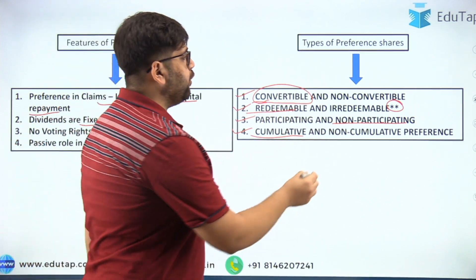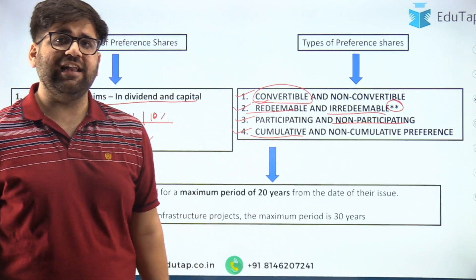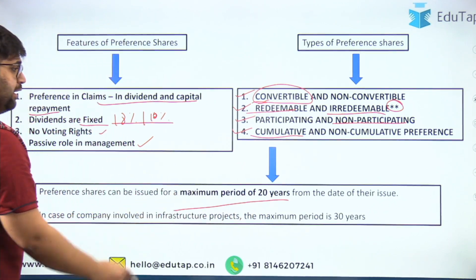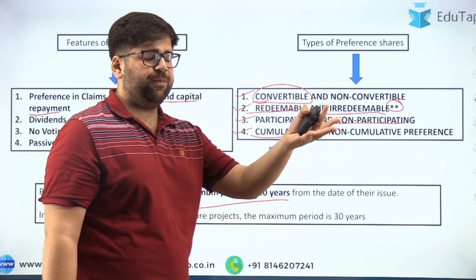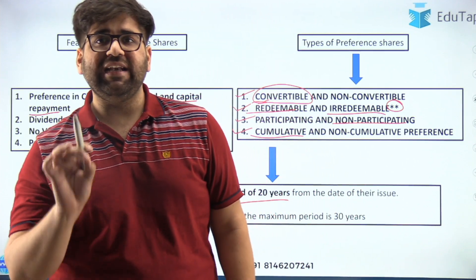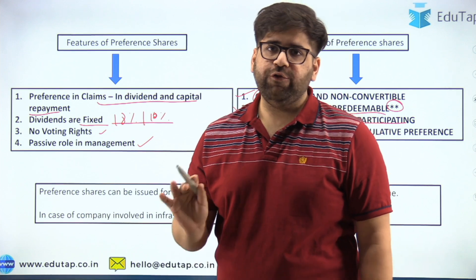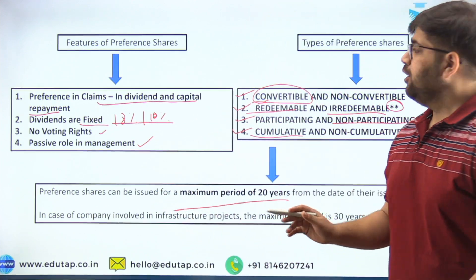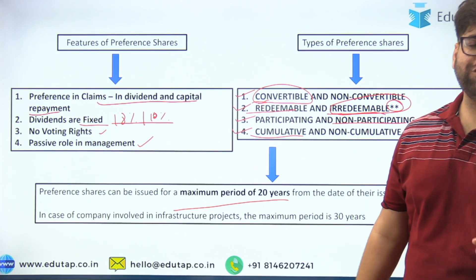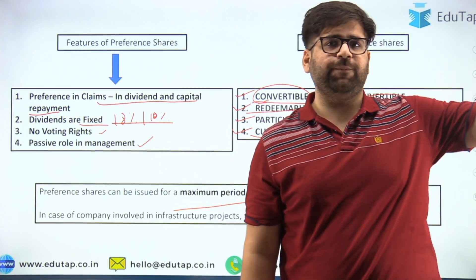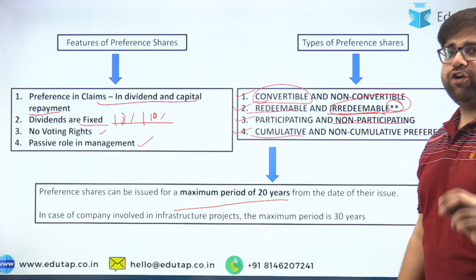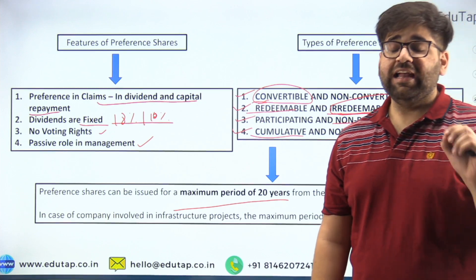Now to decode the asterisk marks on redeemable — this is a very less known fact. Preference shares can be issued for a maximum period of up to 20 years. So a company can only issue preference shares up to a period of 20 years, which means that in India, irredeemable preference shares cannot be issued. Irredeemable means something which cannot be redeemed over the period of life — it is like a perpetuity. According to the Companies Act 2013, irredeemable preference shares cannot be issued in India, though they are included in the syllabus for theoretical knowledge.